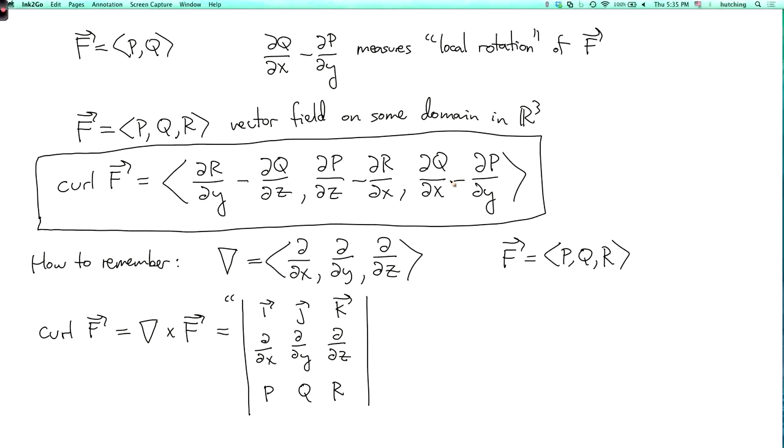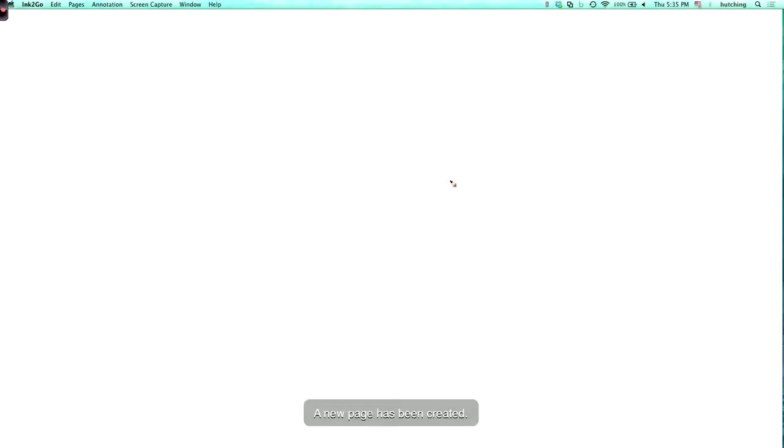Now what is the meaning of this? The interpretation is that curl f also measures local rotation of f. But now it's a vector, not a number. In two dimensions, the local rotation was just a number. Here it's a vector.